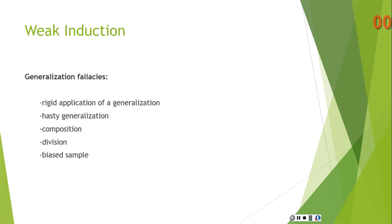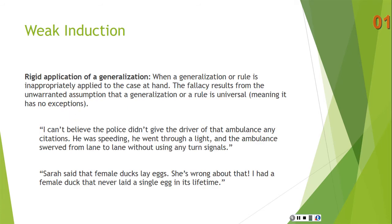Here are some examples of generalization fallacies: rigid application of a generalization, hasty generalization, composition, division, and biased sample. We'll work through each one of those.